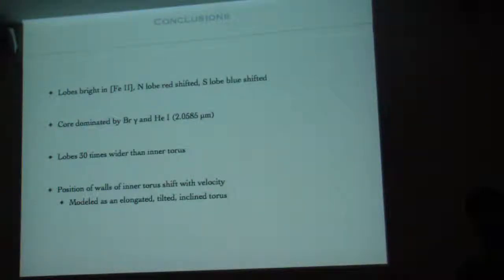So to conclude: the lobes are bright in iron 2. The north lobe is red shifted, and the south lobe is blue shifted. The core is dominated by Brackett gamma and helium 1. And lobes are 30 times wider than the inner torus, so it spans a lot from the inner regions. The positions of the walls of the torus, we find they shift in velocity. We're interpreting this as an elongated warped torus in the center. Thank you.